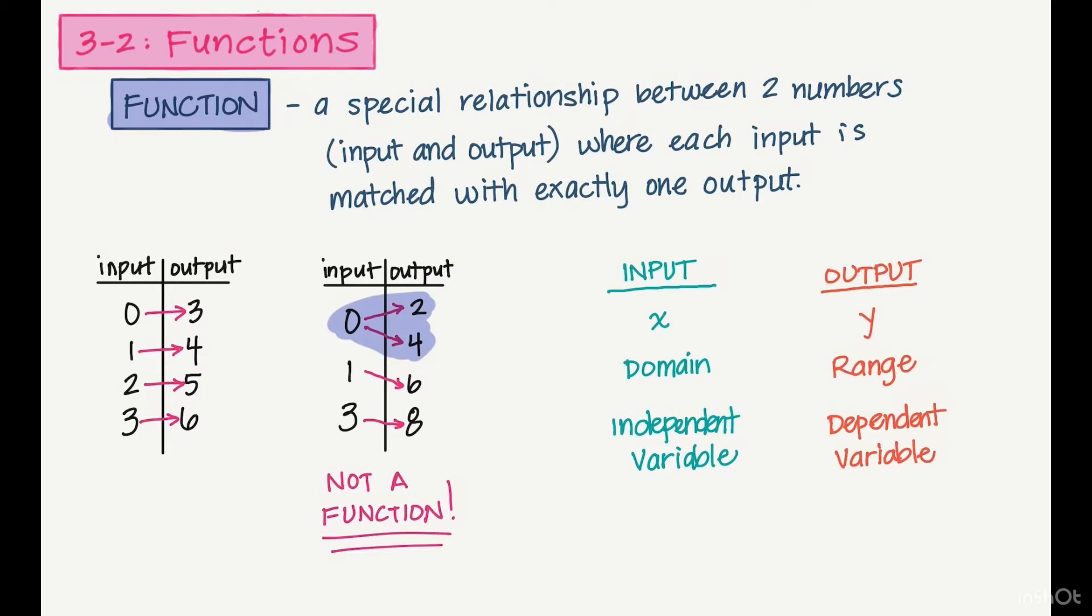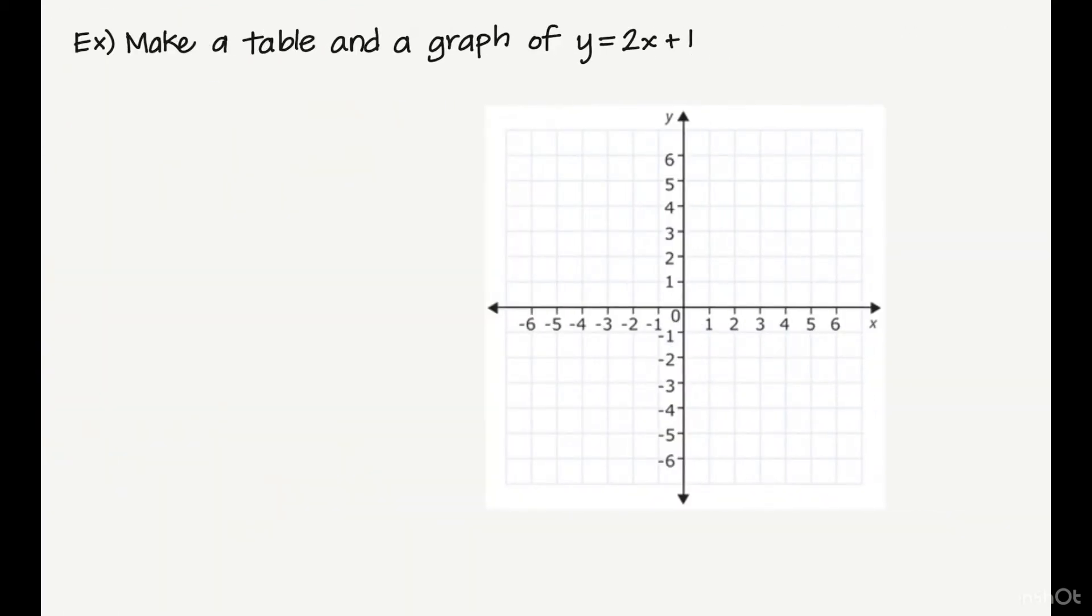What we're going to do now is look at functions represented as an equation. This one is y equals 2x plus 1. First we're going to organize a table, and then we're going to plot it on our graph. So I have my x and my y column with 2x plus 1 as my workspace in the middle. I now get to pick whatever points I want to plug into my function, and I want to pick the easiest points to help me out.